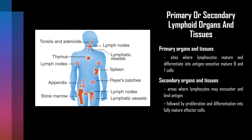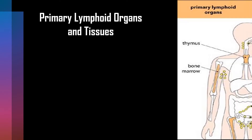Secondary organs and tissues serve as areas where lymphocytes may encounter and bind antigen, which triggers their proliferation and differentiation into fully active antigen-specific effector cells. The spleen is a secondary lymphoid organ, and lymph nodes, mucosal associated lymphoid tissue — MALT — gut associated lymphoid tissue (GALT), and skin associated lymphoid tissues (SALT) are secondary lymphoid tissues.